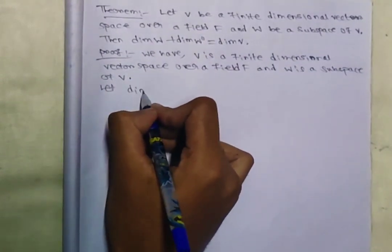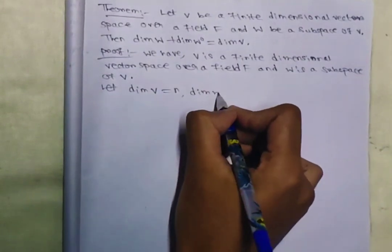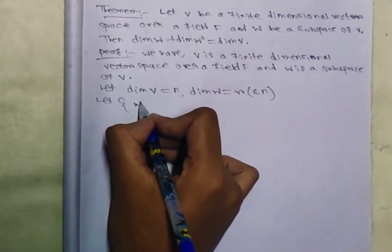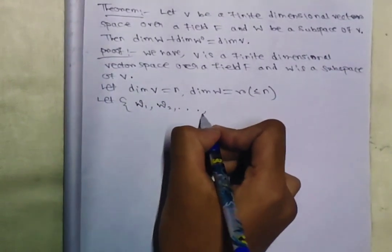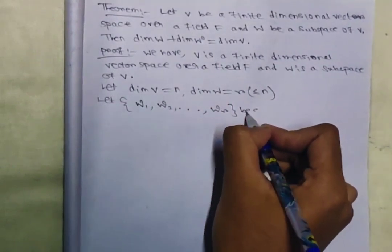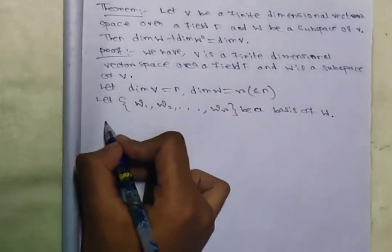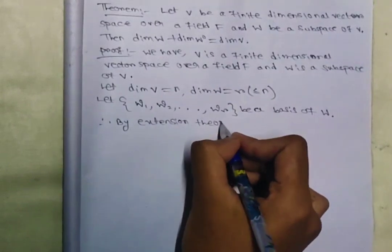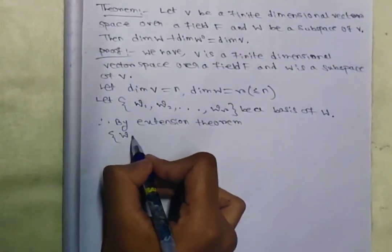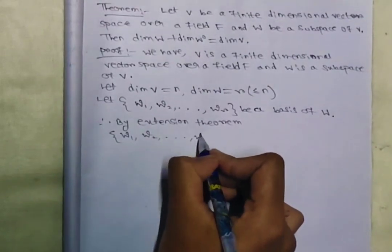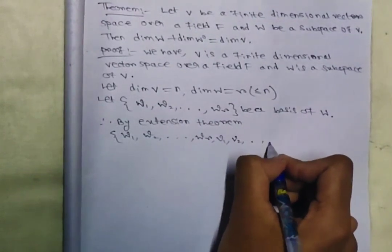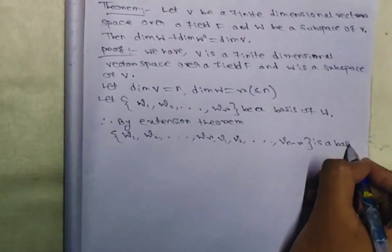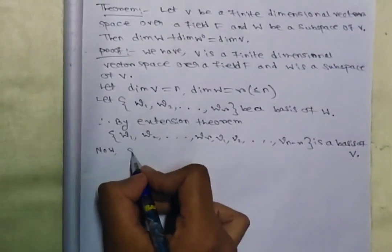Let dimension of V equals to n, and dimension of W equals to r, where r is less than or equals to n. Also let w1, w2, ..., wr be a basis of W. Therefore, by the extension theorem, we can say that w1, w2, ..., wr, v1, v2, ..., v(n-r) is a basis of V.